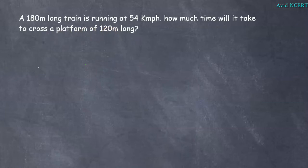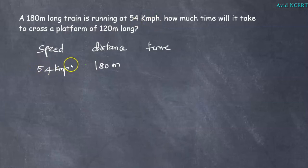So the data we have here is speed, distance, time. So from the first sentence we know that a 180 meter long train, so when it is long it means distance, 180 meter, is running at 54 km per hour, which is speed.